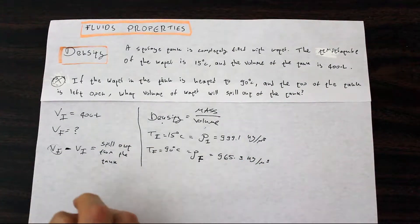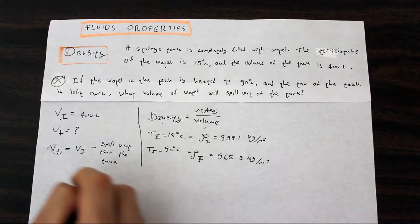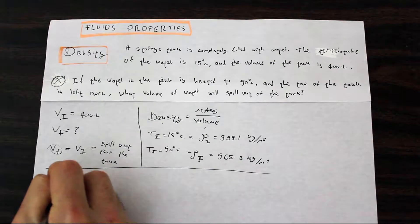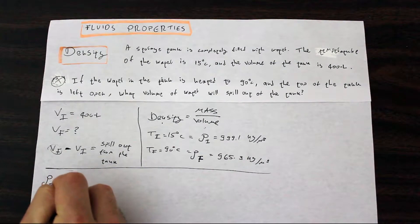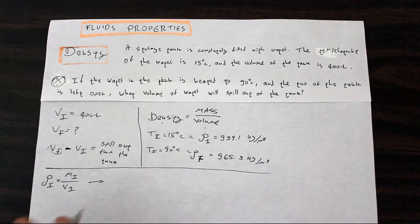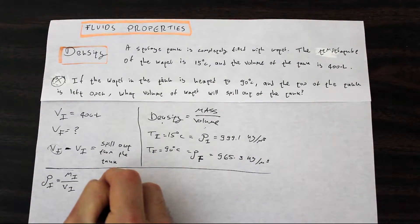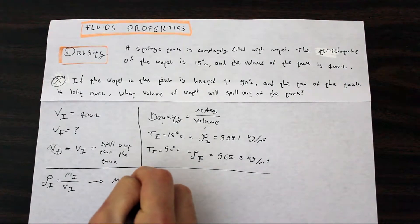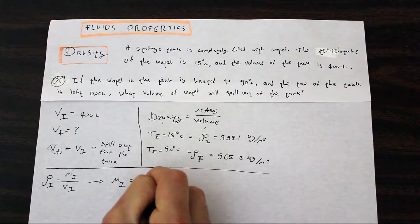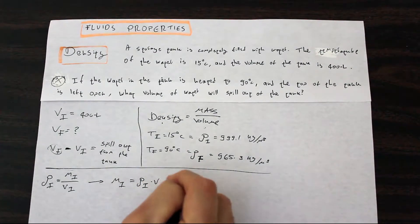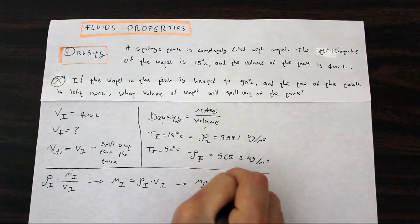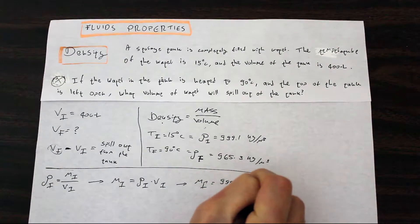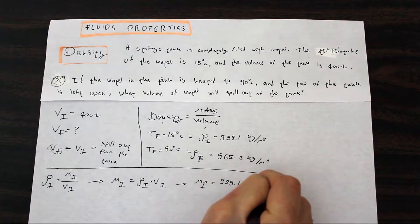Now we can set up our first equation and start solving the question. The initial density is equal to the initial mass over the initial volume. Changing the equation a little bit, we can say that the initial mass is equal to the initial density times initial volume, because those are two numbers that we have.